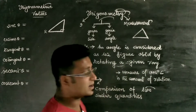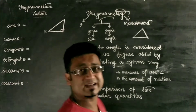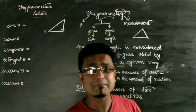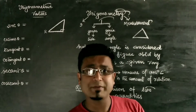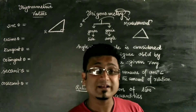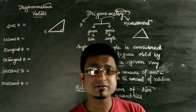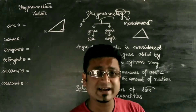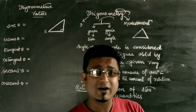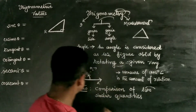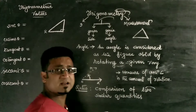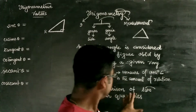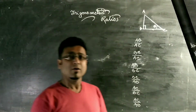You now know what a triangle is and what an angle means. After that, you need to know the term 'ratio', which you have done in class 7 and 8. For example, you can compare the height of two students, or the temperature of two liquids. But can you compare the mass of one quantity with the temperature of another? No — you have to compare similar quantities. That comparison of two similar quantities is called a ratio.